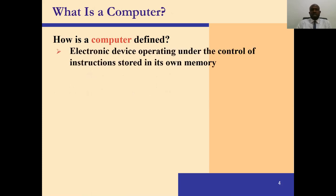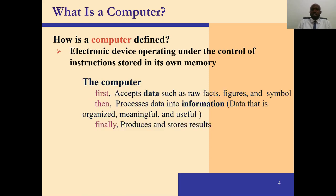A computer is an electronic device which operates under the control of instructions stored in its own memory. Those instructions are what we call the program or software. The computer first accepts data from the user — raw facts, figures, and symbols — then processes this data into information, which is data that has been organized and is meaningful and useful. The processed information is then produced or stored — for example, stored on your laptop, printed out, or displayed on screen.